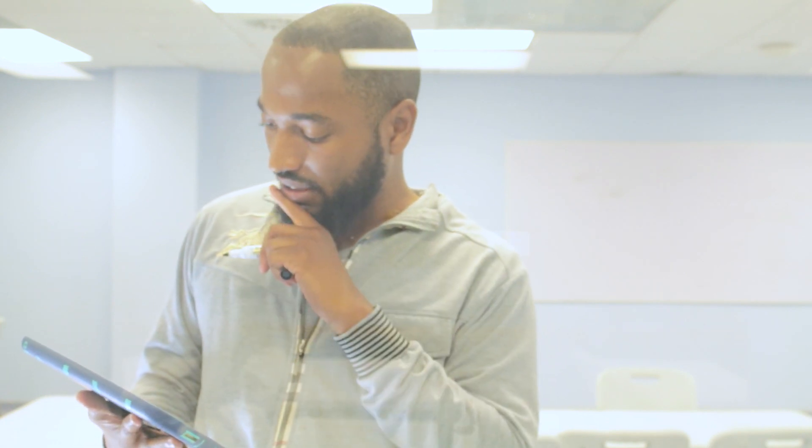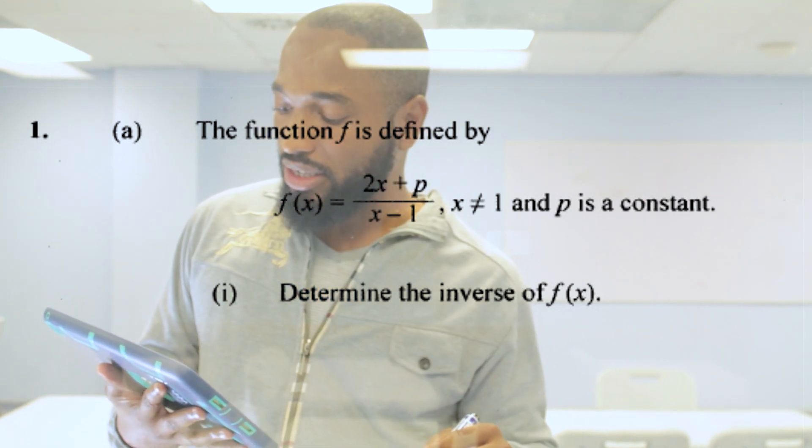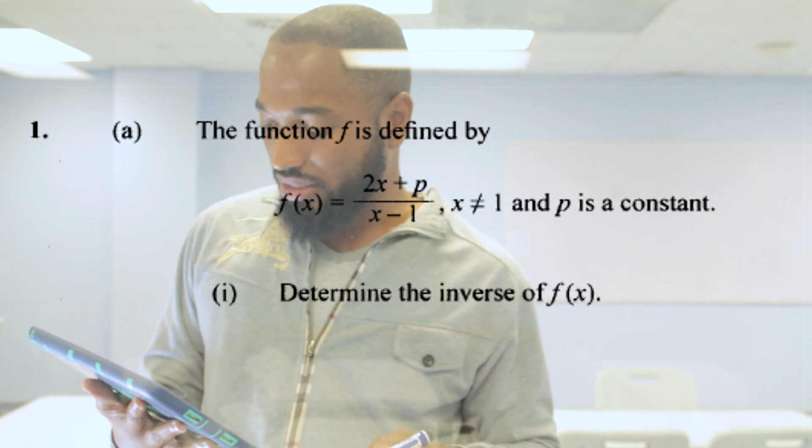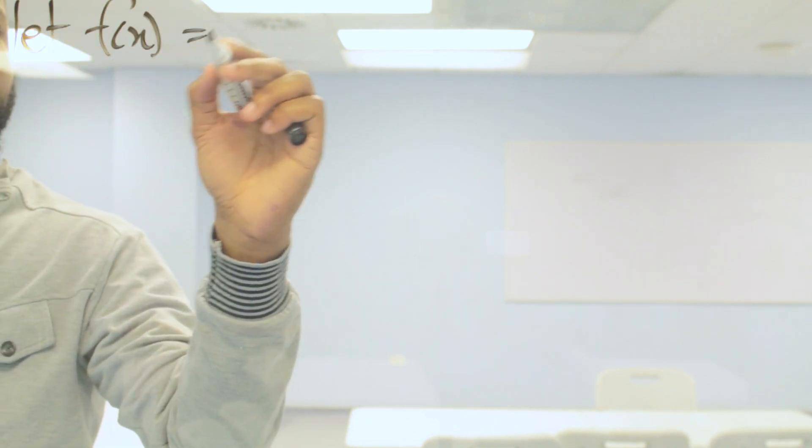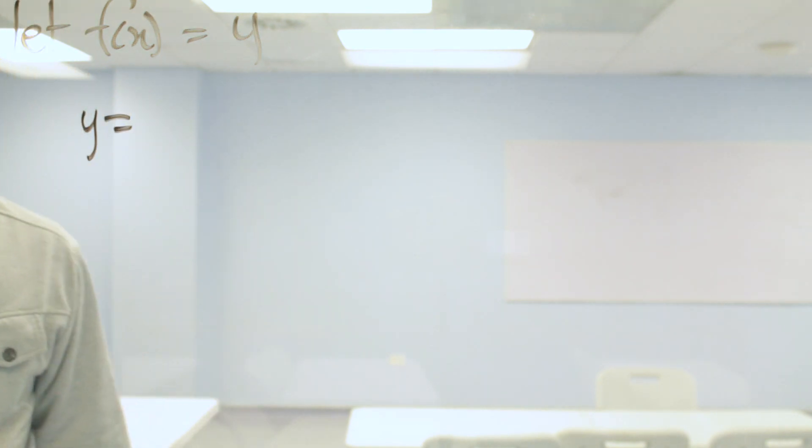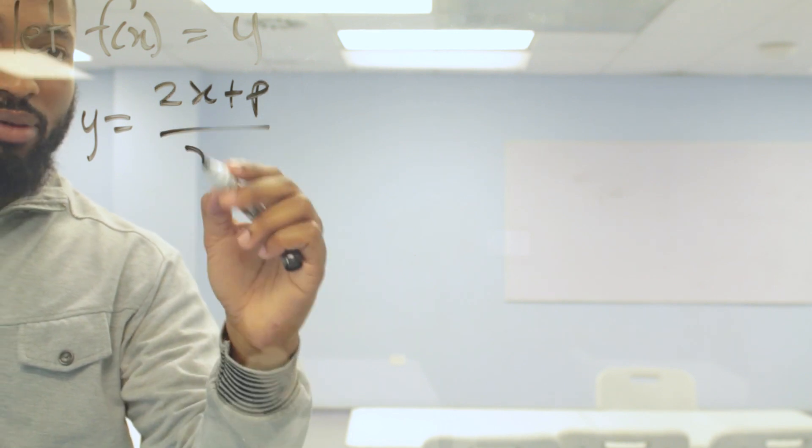Let's start off with the first question, 2017, last year. The function f is defined by f of x is equal to 2x plus p over x minus 1, x is not equal to 1 because we don't want to divide by 0, p must be a constant. Determining the inverse of f of x. So to start off this question, you let f of x be equal to y, so then your equation will look like y is equal to 2x plus p over x minus 1.